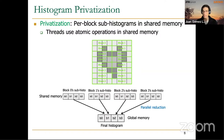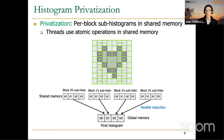In privatization, the idea is to create multiple private histograms that are updated by only a subset of threads of the grid. Threads belonging to the same thread block can have their own sub-histogram in shared memory, and after the sub-histograms are complete, we have a reduction step to compute the final histogram stored in global memory.